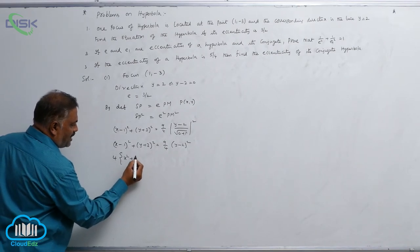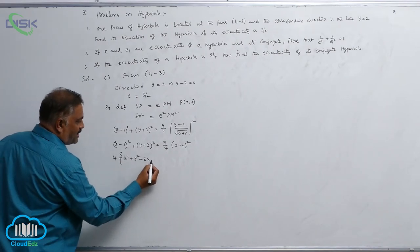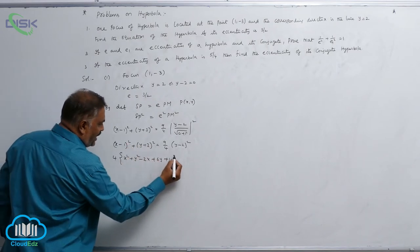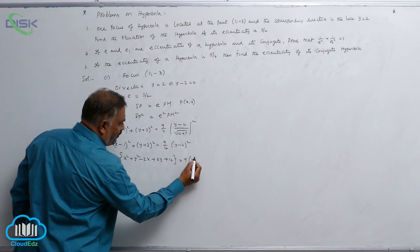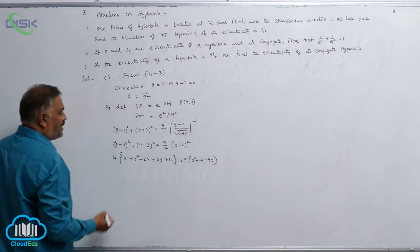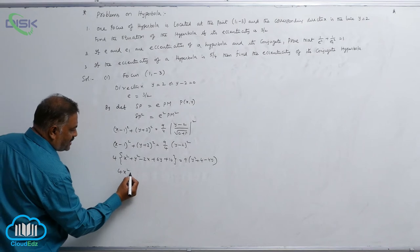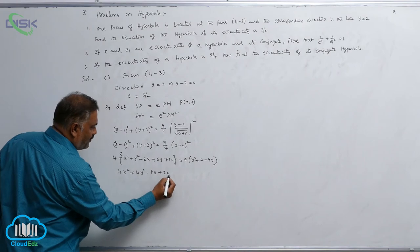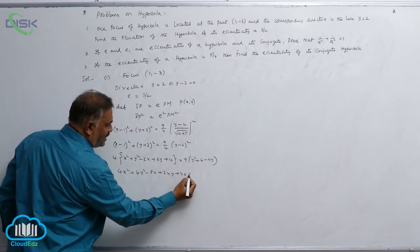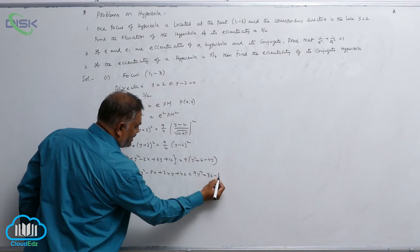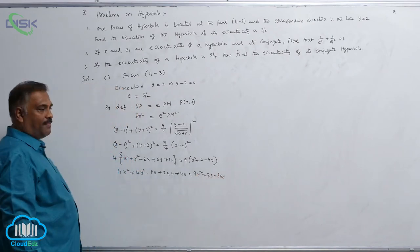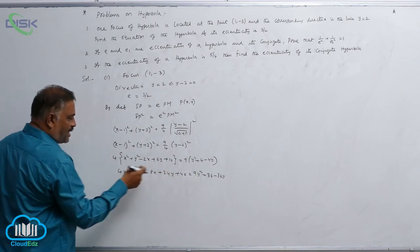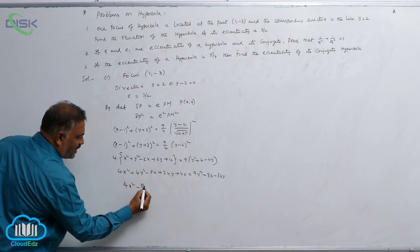After cross multiplication: 4(x² + y² - 2x + 6y + 10) = 9(y² + 4 - 4y). Expanding: 4x² + 4y² - 8x + 24y + 40 = 9y² + 36 - 36y. Bringing terms together: 4x² and then 4y² - 9y² gives -5y².